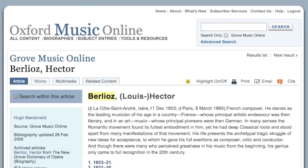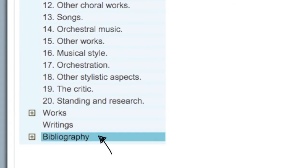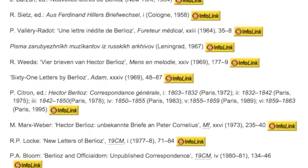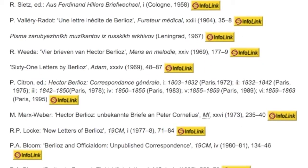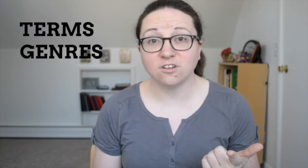All entries, whether biographical or subject, contain a bibliography, which is a list of sources that were used to write the article, and an expanded list of sources that are just important to the topic of the article. Subject entries are pretty much everything else — so terms, genres, and styles.